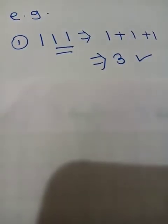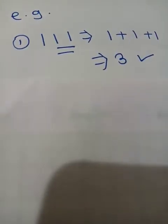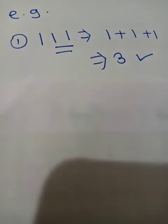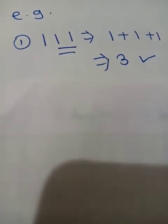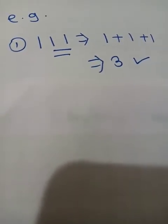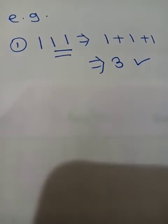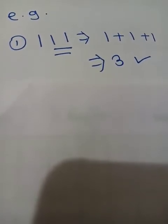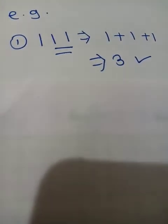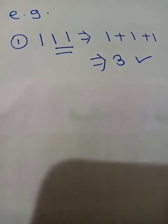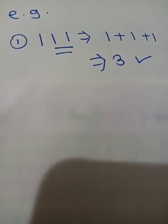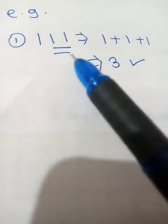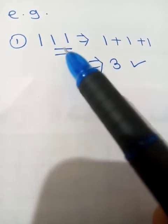Now, I hope you observe this example. The first number is 111. The sum of digits is 1 plus 1 plus 1, which equals 3. You know the divisibility test for 3 and 9 — this number is divisible by 3. The number formed by the units and tens place is 11.